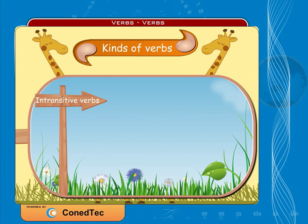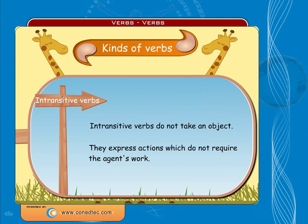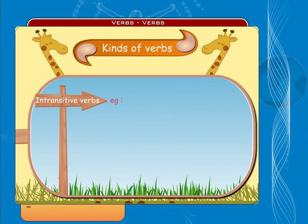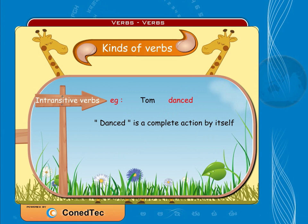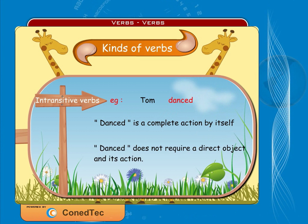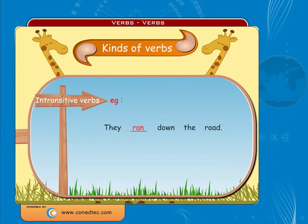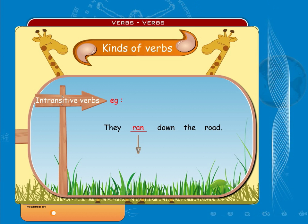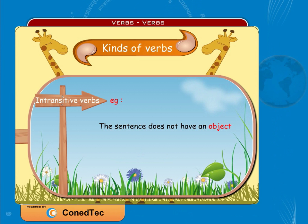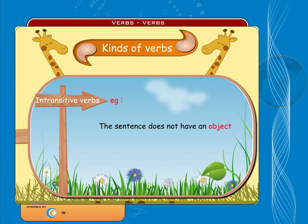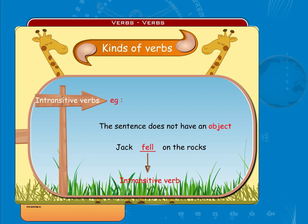Intransitive verbs do not take an object. They express actions that do not require the agent to do something to someone else. Example: 'Tom danced' — the verb 'danced' is a complete action by itself and does not require a direct object. In 'They ran down the road,' 'ran' is an intransitive verb — they did not run something. The sentence contains no object. In 'Jack fell on the rocks,' 'fell' is an intransitive verb.